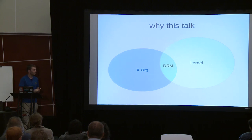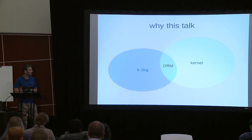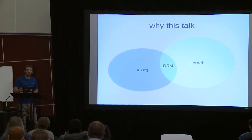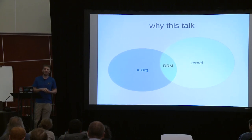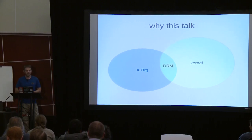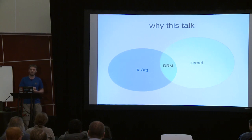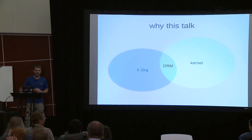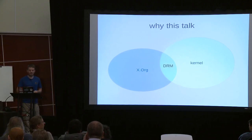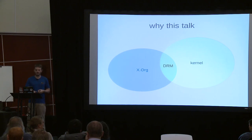Why this talk, or why I think migrating to GitLab is relevant for the kernel — at least for kernel graphics, maybe kernel at large. The graphics subsystem DRM is a fairly small part of the kernel, but it is also a fairly small part of the open source graphics stack. If you look at the open source graphics stack, there's Vulkan drivers, GL drivers, compositors, input drivers. DRM is kind of in the middle, so we've had a lot of influence from both sides.